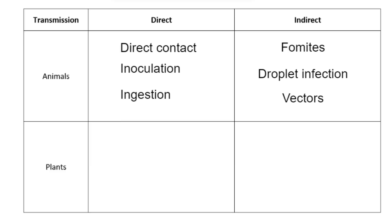The third method of indirect transmission is vectors — in this case, animals that transfer the pathogen from one animal to another. An example is the female Anopheles mosquito, which transmits malaria. As the mosquito sucks blood from an infected patient and then feeds on a healthy individual, it transfers the protist into the healthy individual's bloodstream.